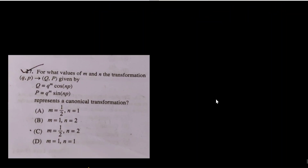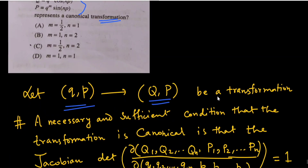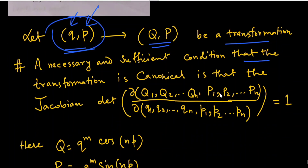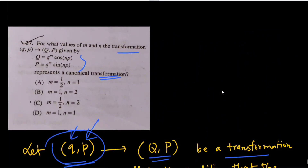The next question: for what values of m and n does the transformation (q, p) → (Q, P) represent a canonical transformation? The necessary and sufficient condition for a transformation to be canonical is that the Jacobian ∂(Q₁,...,Qₙ, P₁,...,Pₙ)/∂(q₁,...,qₙ, p₁,...,pₙ) = 1. Here there is only one generalized coordinate and one generalized momentum.